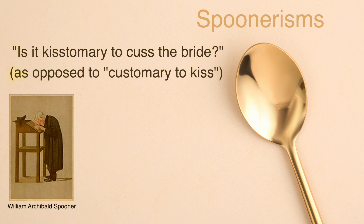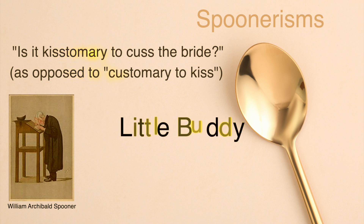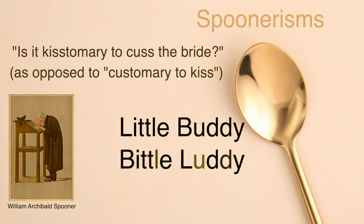And how do you create a Spoonerism? To create a Spoonerism, replace the consonants at the beginning of the first word with the consonants from the start of the second word, leaving the vowels and remaining consonants intact. For example, in the phrase Little Buddy, the L in Little is replaced with the B in Buddy.